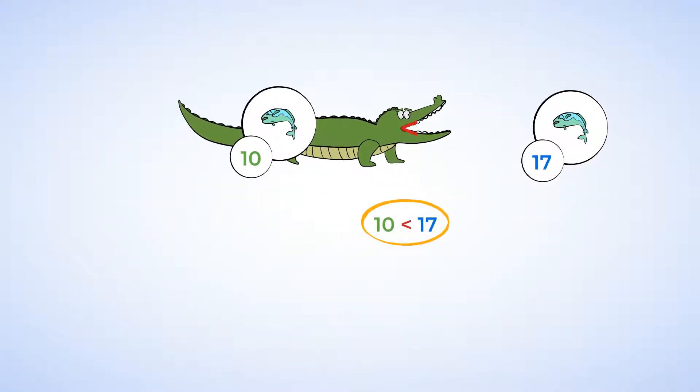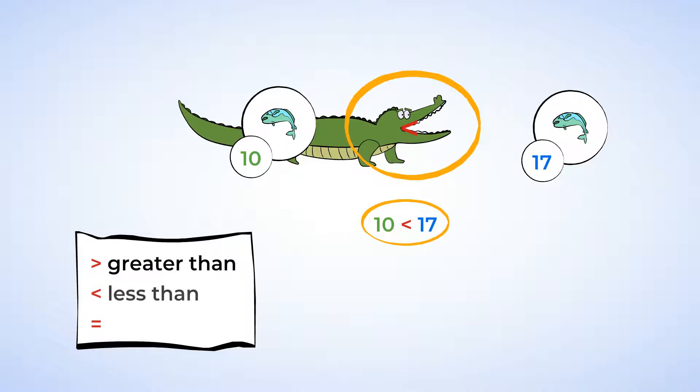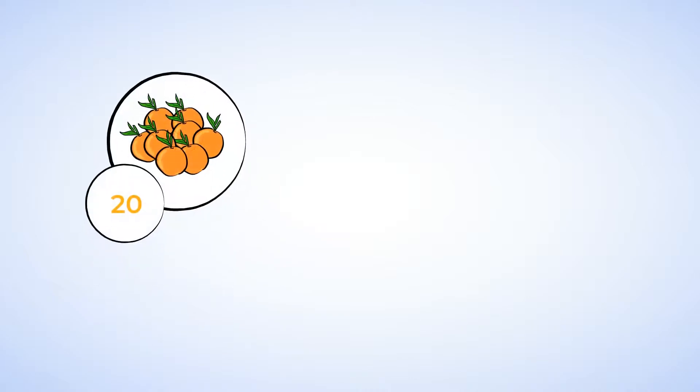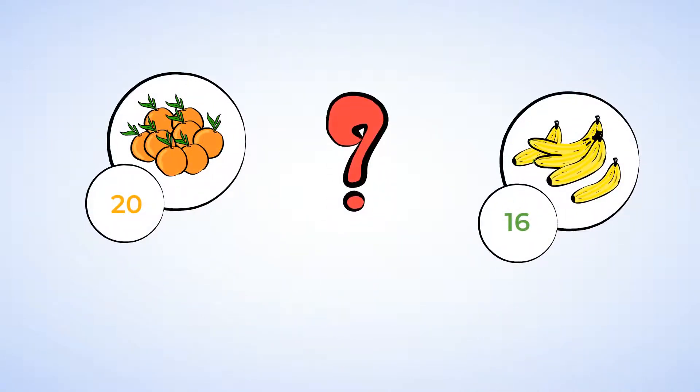Now let's dive in and compare some numbers together using these mighty symbols. Don't forget to face the open mouth towards the bigger number and then read it using these words: greater than, less than, or equal to. You have 20 oranges and 16 bananas. Which symbol should we put?